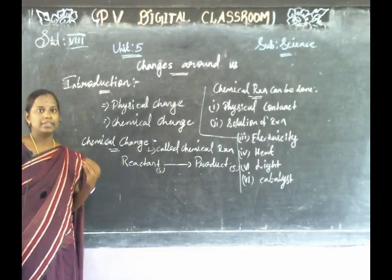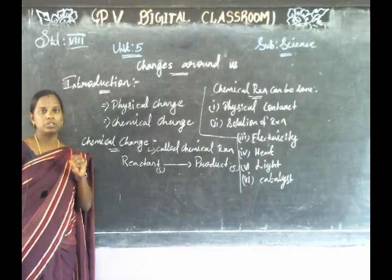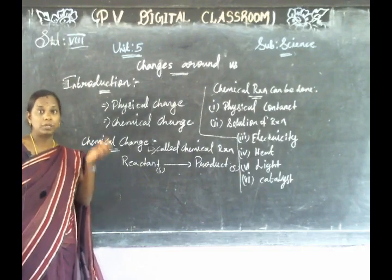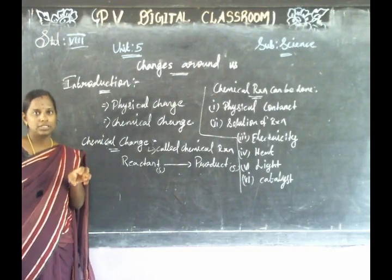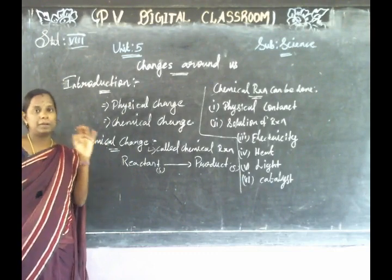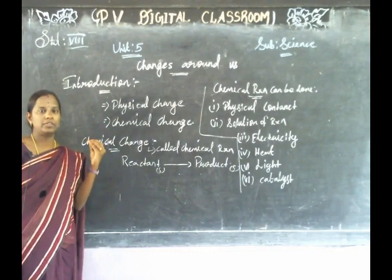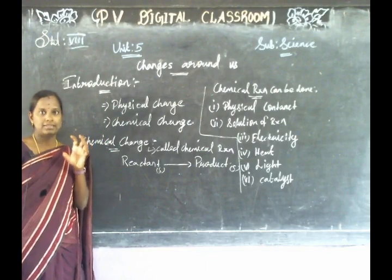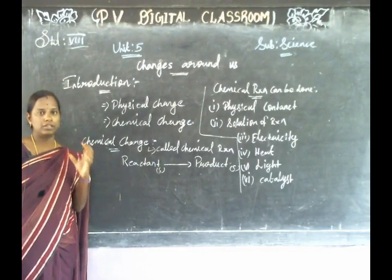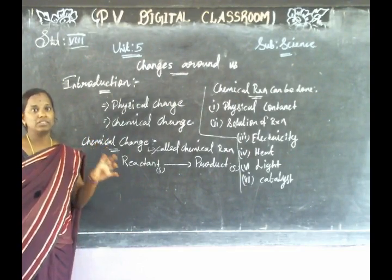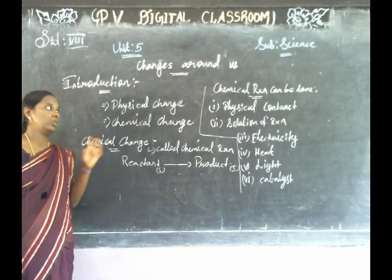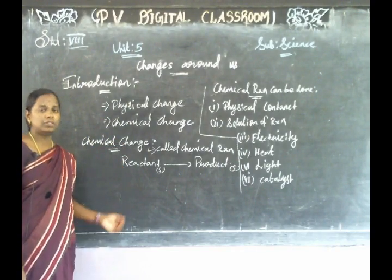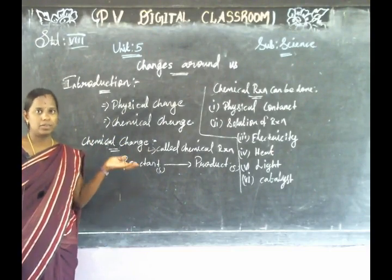Chemical change examples include burning of wood. There is an introduction about a boy in Delhi — the Iron Pillar — which was at 1500 years ago and remains without rust. That's a chemical change example. Chemical change involves a chemical reaction, and such reactions are called chemical reactions.